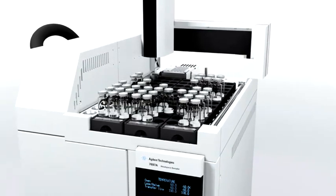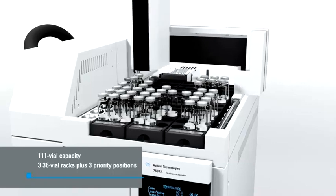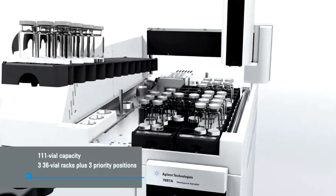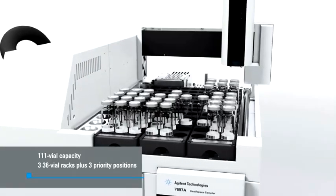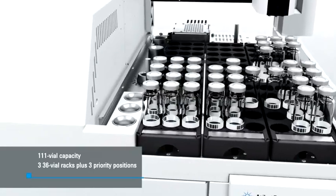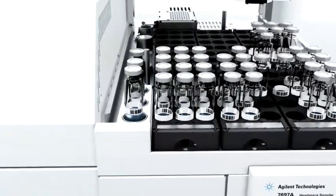The sampler is designed to maximize productivity and can hold up to 111 vials. Three 36-vial racks can be exchanged while the Headspace Sampler is operating to enable high-throughput operation. Three priority positions allow you to easily insert urgent samples into the queue at any time.